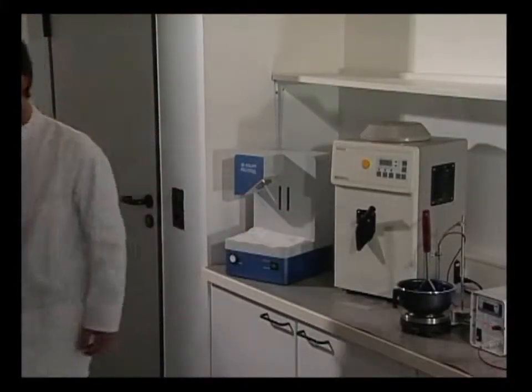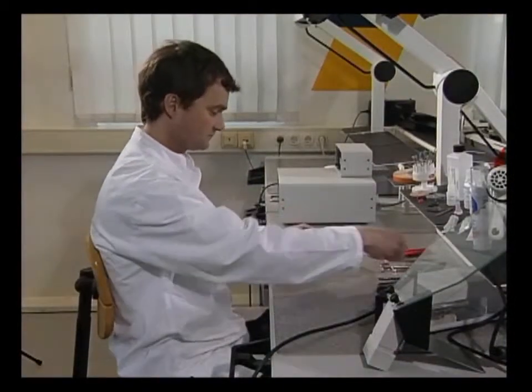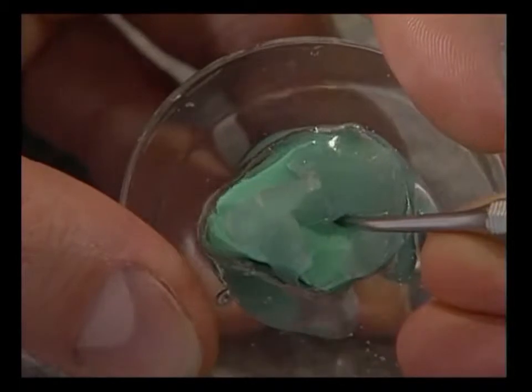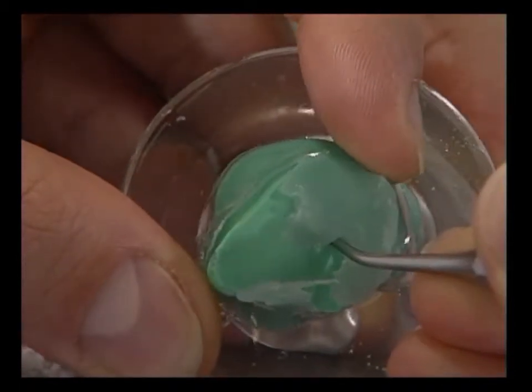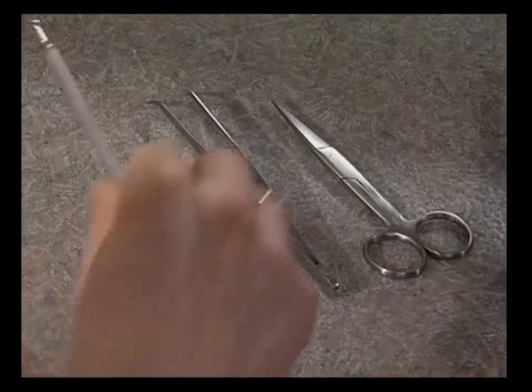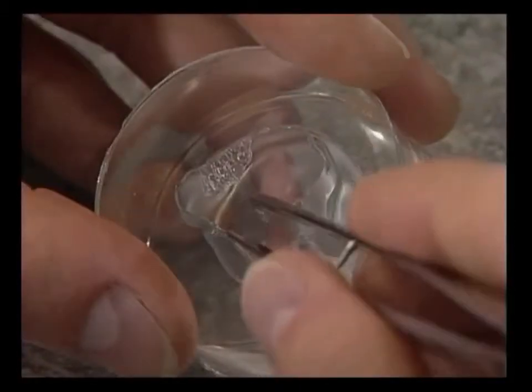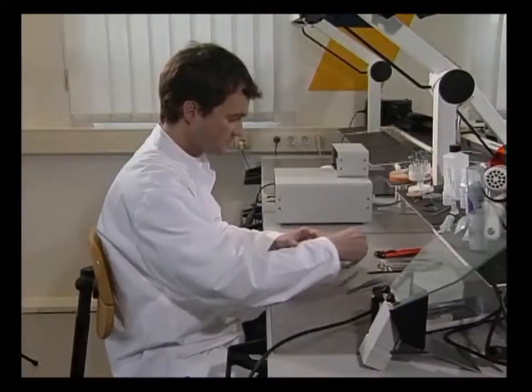Some 10 to 12 minutes later, the control form is cured. The impression is taken out of the silicone with the impression removing instrument. Any dipping wax still remaining in the negative form is removed with tweezers or blown out with compressed air.